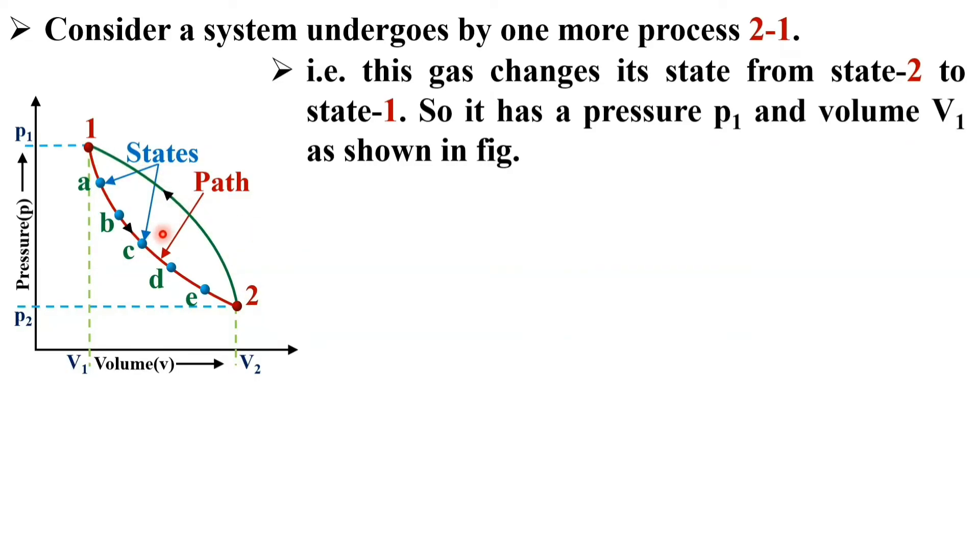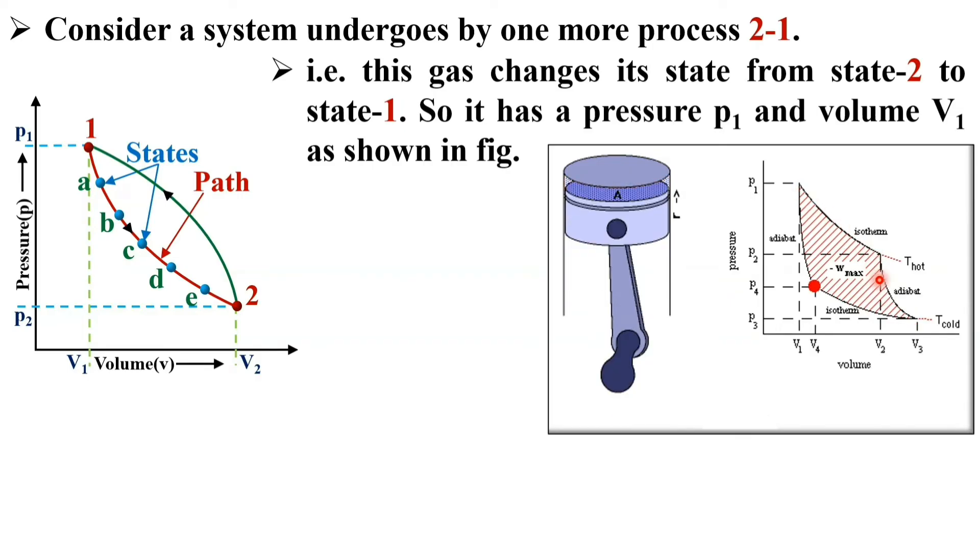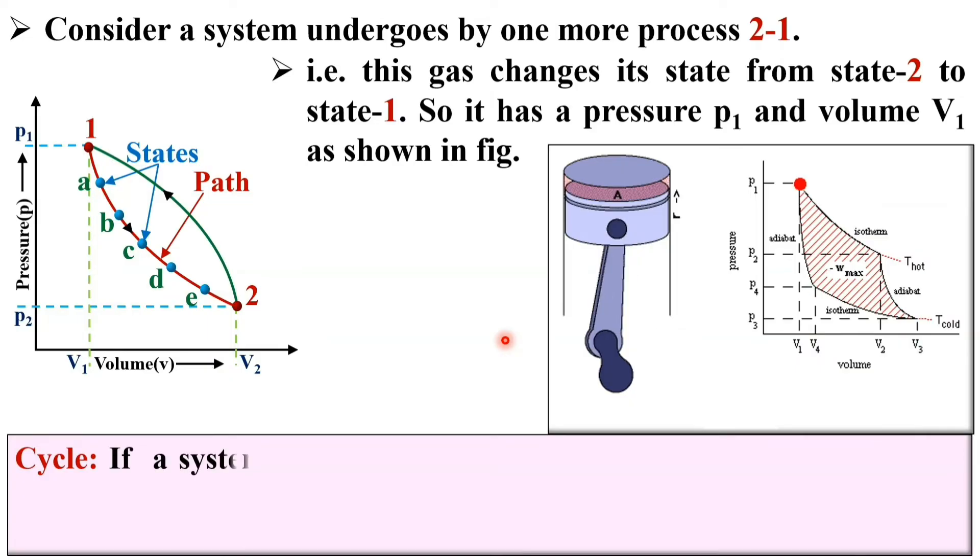Here there are two processes: process 1-2 and then followed by 2-1. In this figure, you can see there are four different processes. Now I can define the cycle.